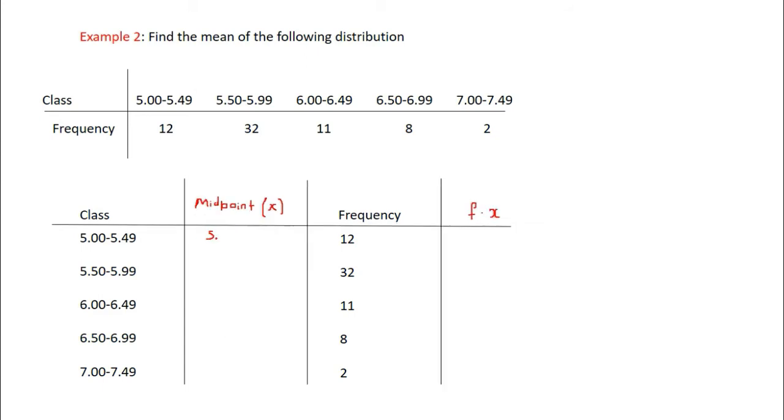And then we're going to multiply our x values times our frequency. So the first class midpoint is 5.245, then 5.745, 6.245, 6.745, 7.245.